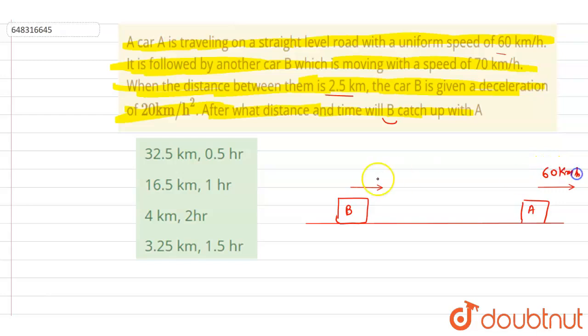A has speed 60 kilometer per hour, and it is given that B is given a deceleration, that is acceleration in opposite direction, and the distance between the two is 2.5 kilometers.